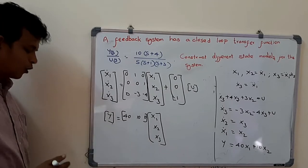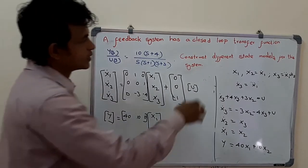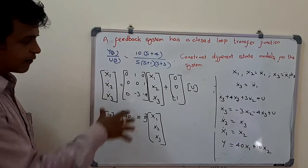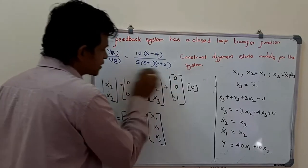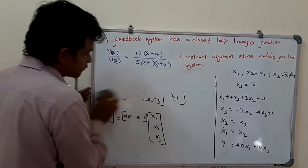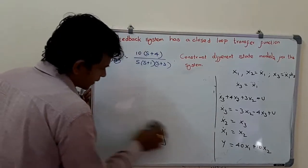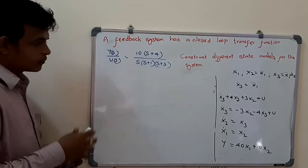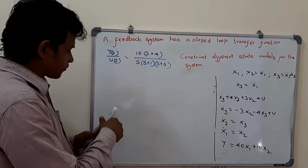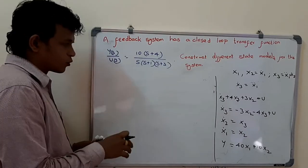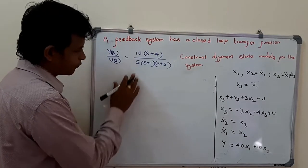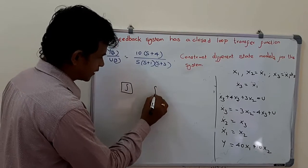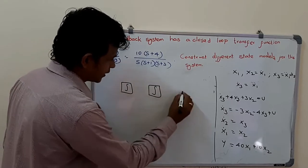These two equations — the state equation and the output equation — together form the state model. We can also draw the state diagram for this approach. For this transfer function we have three integrators. Let us draw integrators 1, 2, and 3.